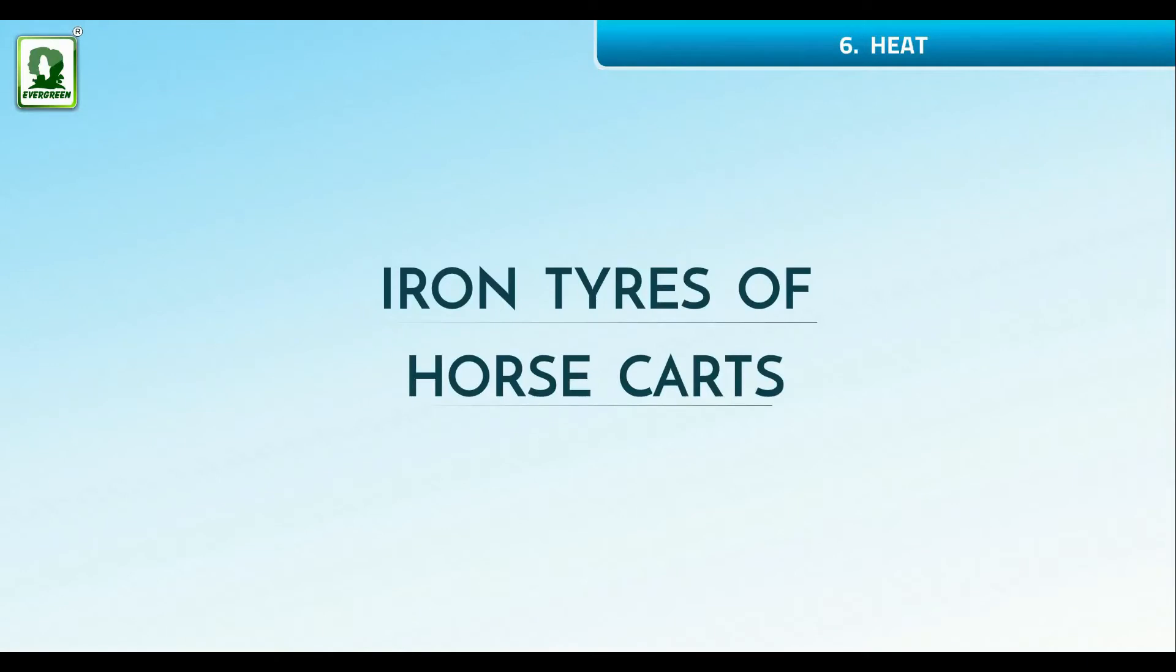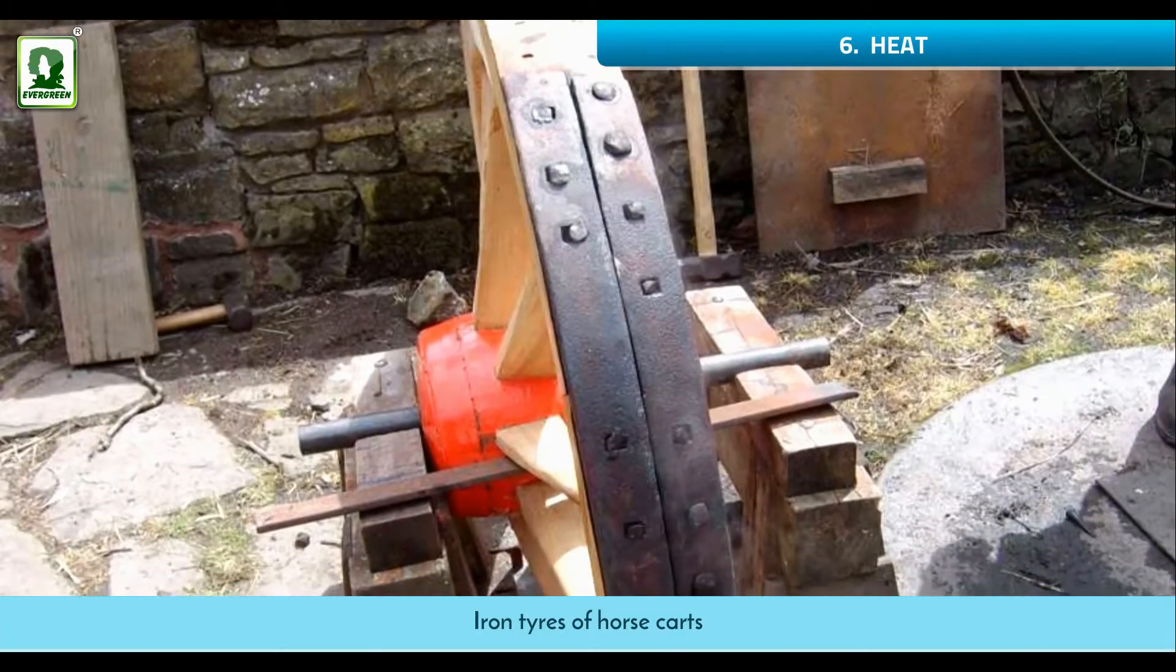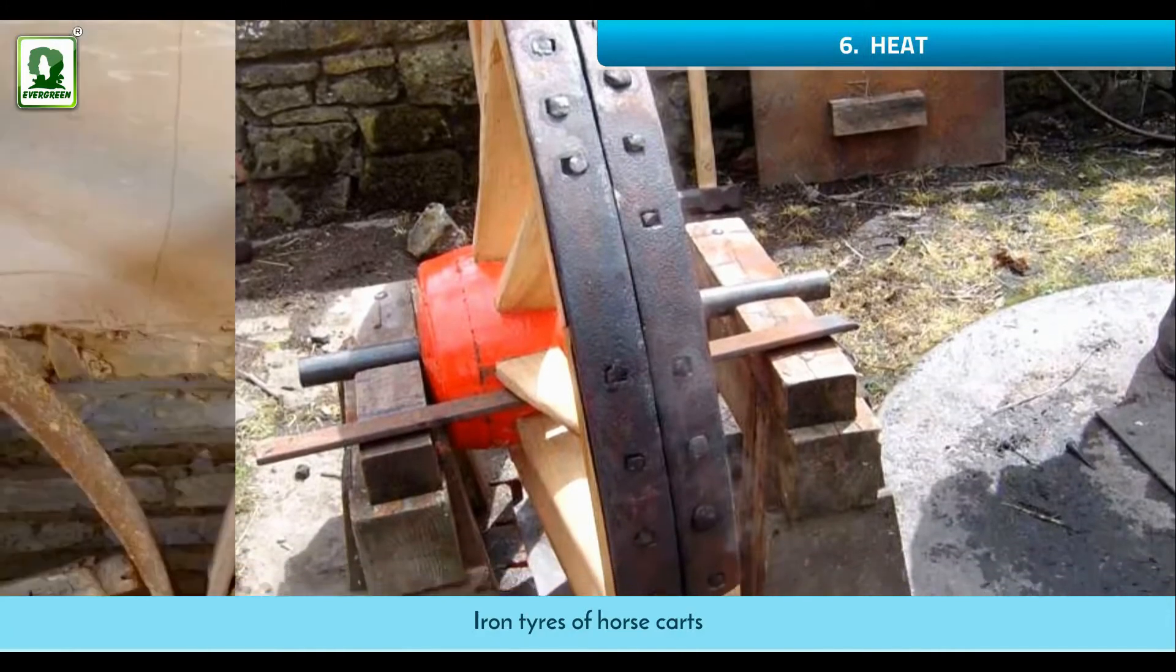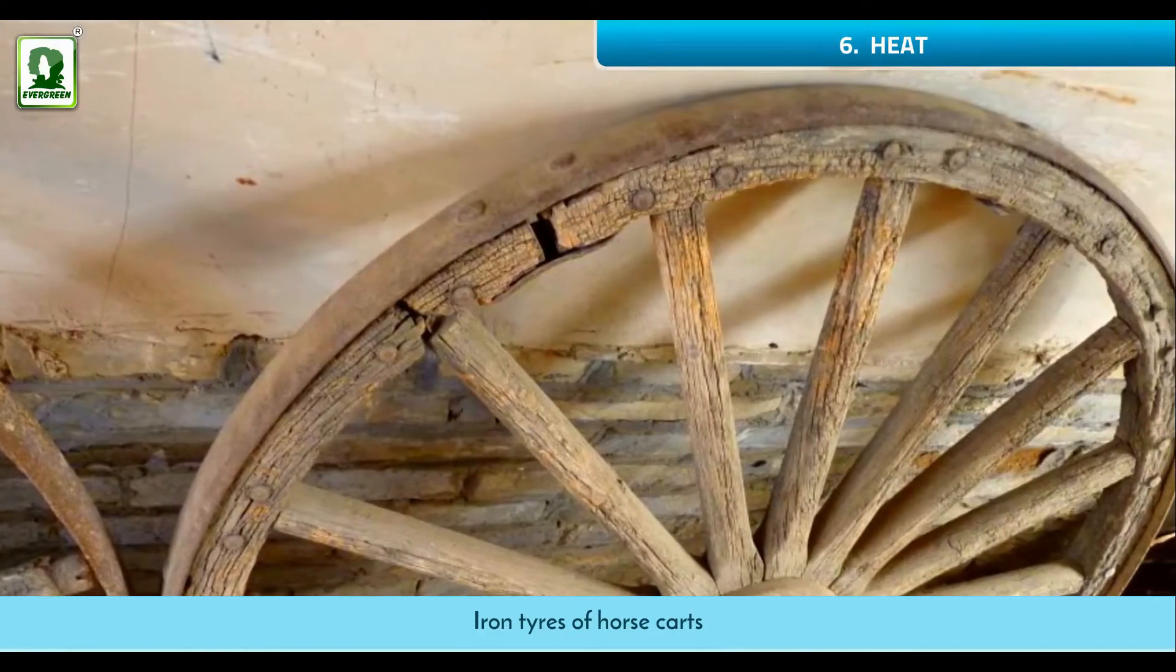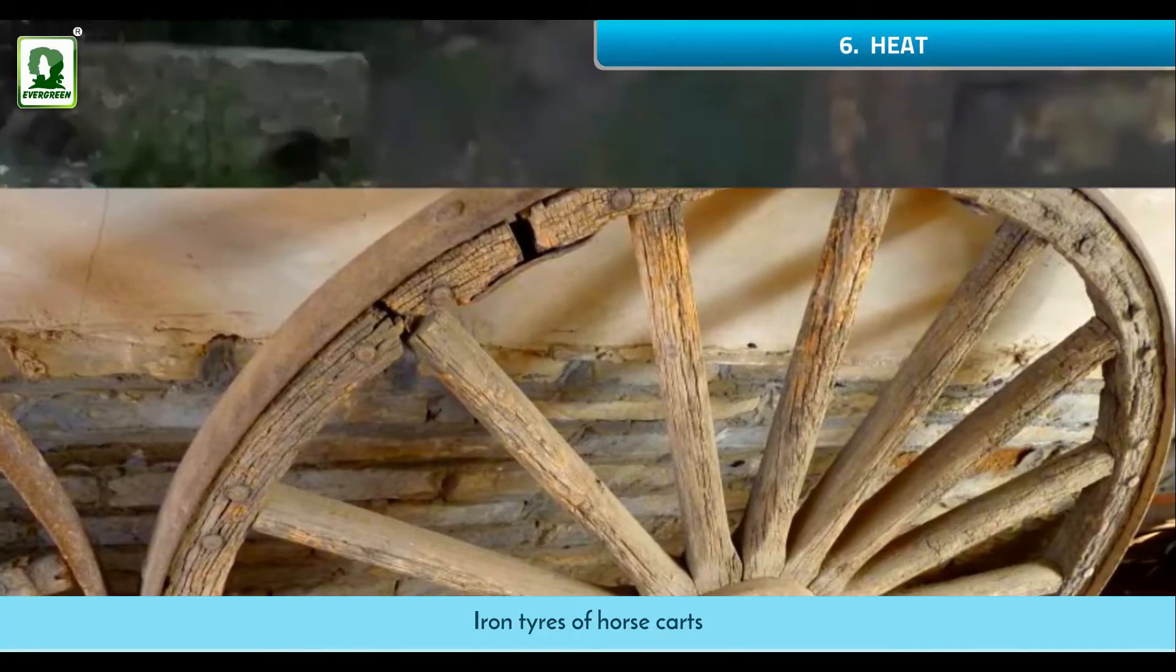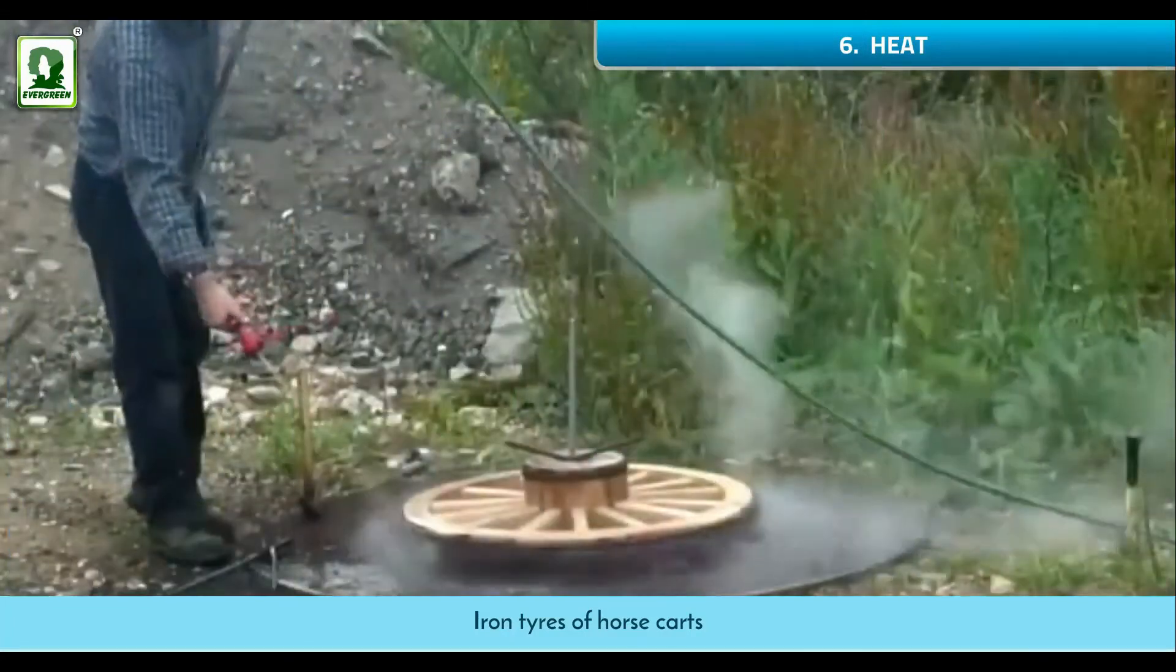Iron tires of horse carts: To fit an iron rim tightly on the wheel, it is made with a diameter slightly smaller than that of the wheel. It is heated and made to slide over the wheel and then left to cool. It contracts and fits very tightly.